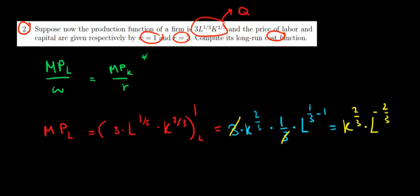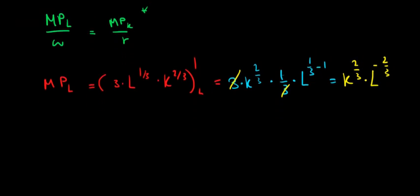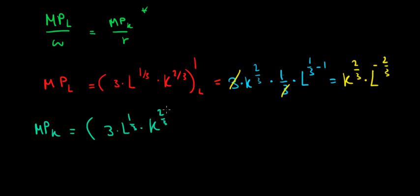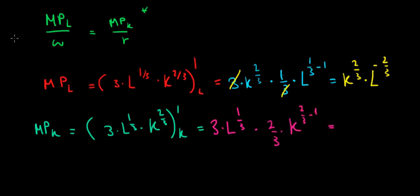With the same logic, we find the marginal product with respect to capital. We take this production function and differentiate with respect to capital — capital is the variable, everything else is constant. Writing the constants first: 3 times l to the power 1/3, and we differentiate k to the power 2/3, taking the power down. Working out the math and canceling 3 and 3, we get 2 times l to the power 1/3 times k to the power negative 1/3. So MPK = 2 * l^(1/3) * k^(-1/3).